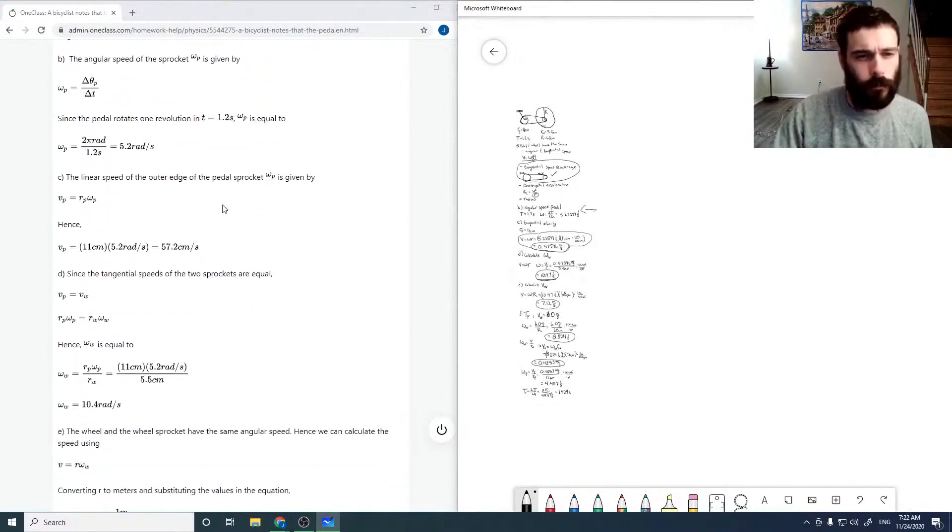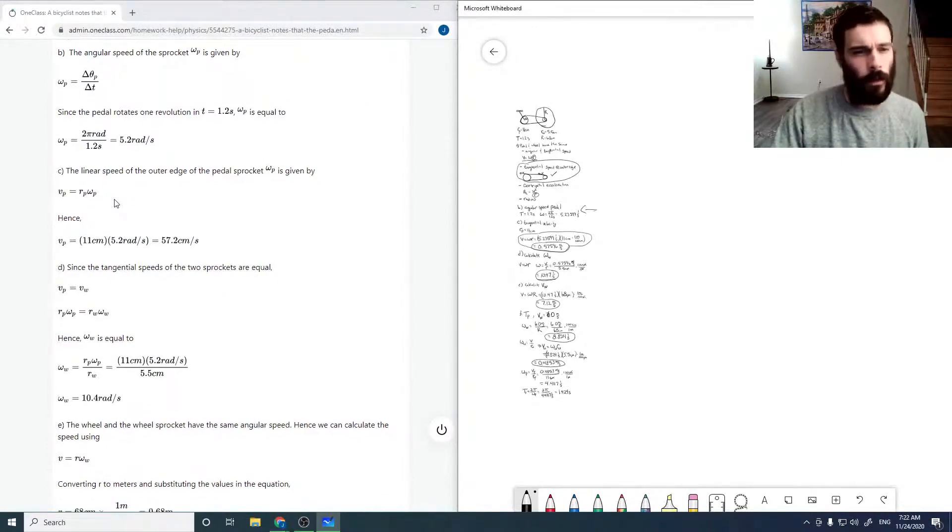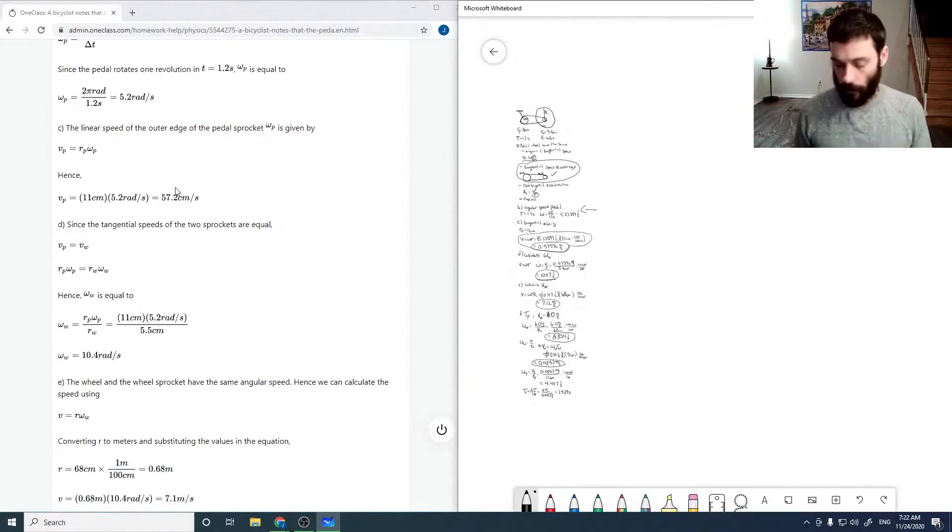The linear speed of the outer edge is computed from that expression, which comes out to be 57.2 centimeters per second. Oh, I guess I carried around quite a few extra digits. So there's probably just some rounding error in there.